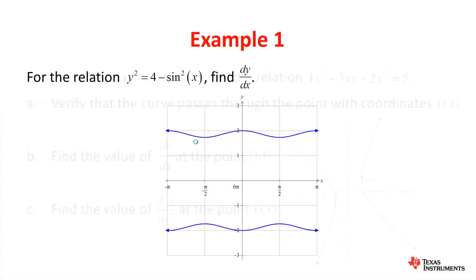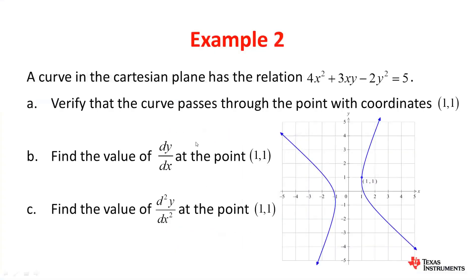Moving on to our second example: we have a curve in the Cartesian plane which has the relation 4x squared plus 3xy minus 2y squared equals 5. Part A says: verify that the curve passes through the point with coordinates (1, 1).